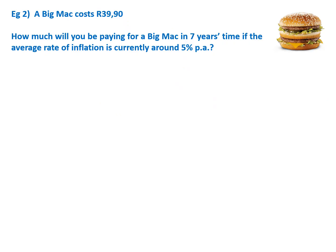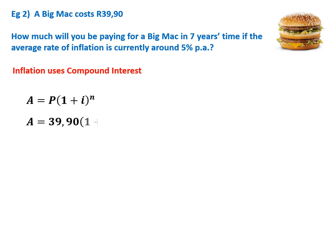Let's look at everybody's favourite Big Mac burger. At the moment it costs R39.90. How much will we be paying for a Big Mac in seven years time if the average rate of inflation is currently around 5% per annum? We're using inflation, which uses compound interest. At the moment it's R39.90 — this is where it's starting. The interest rate is 5%, so 0.05. In seven years time it's going to cost us R56.14.